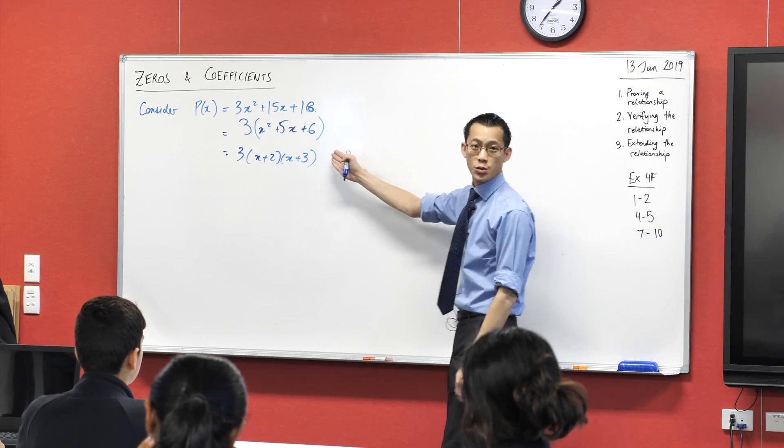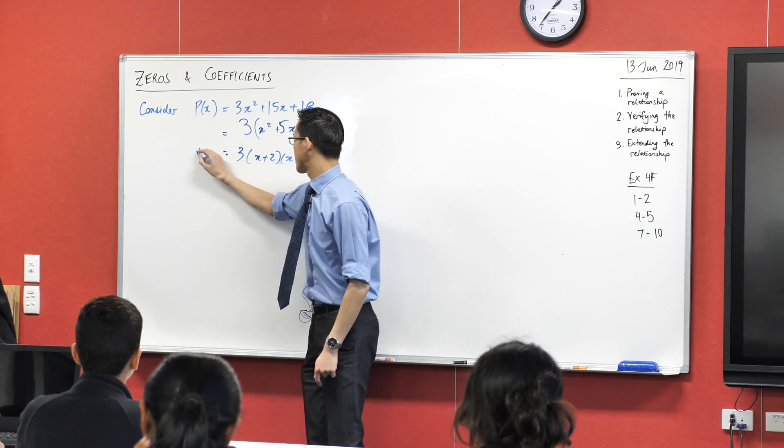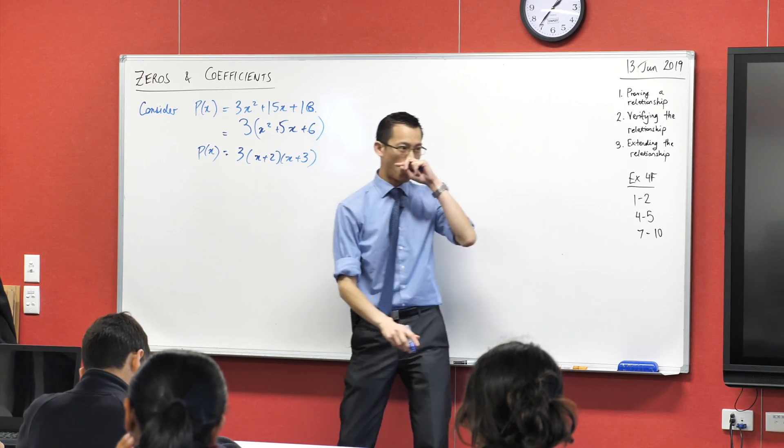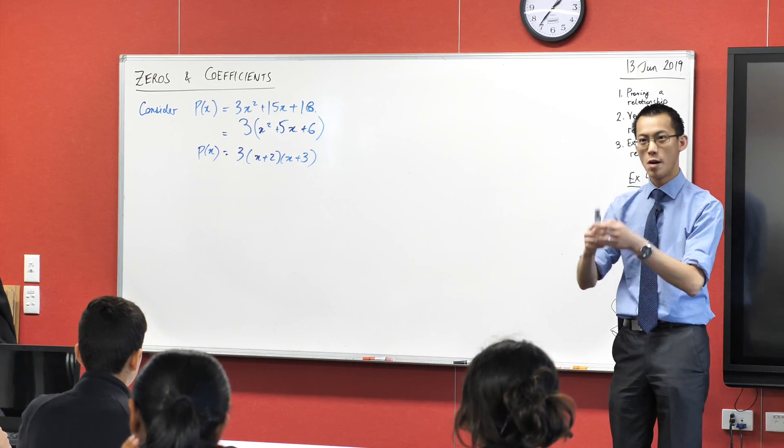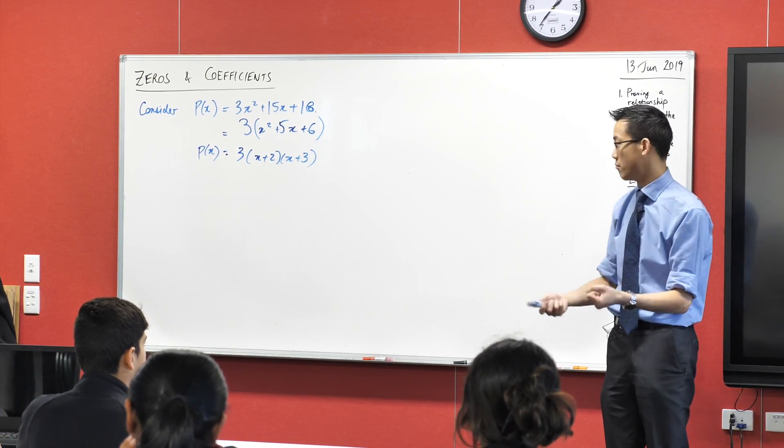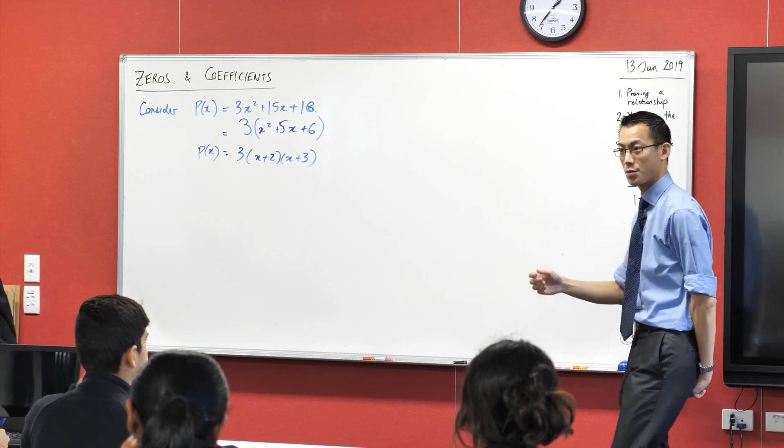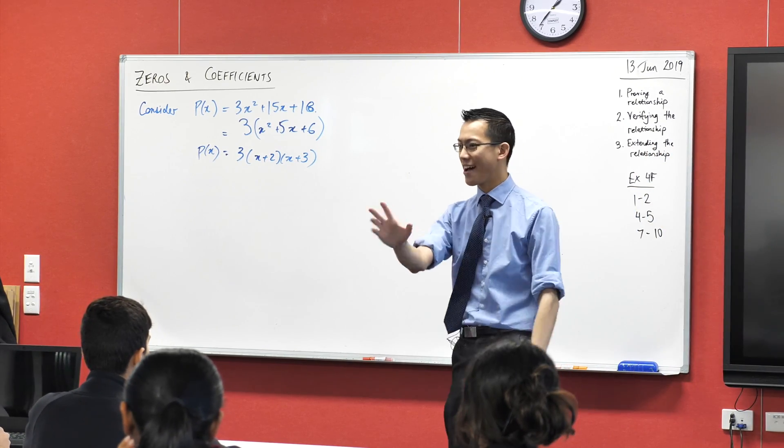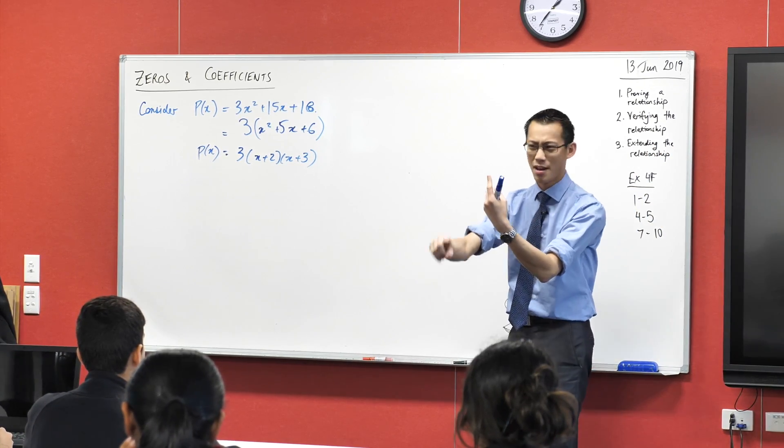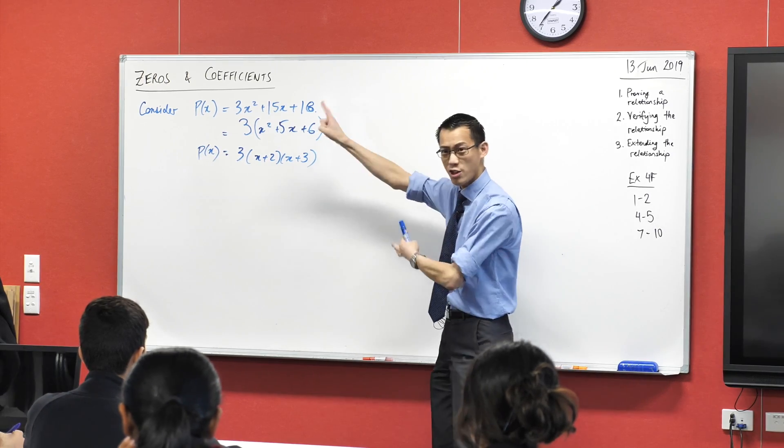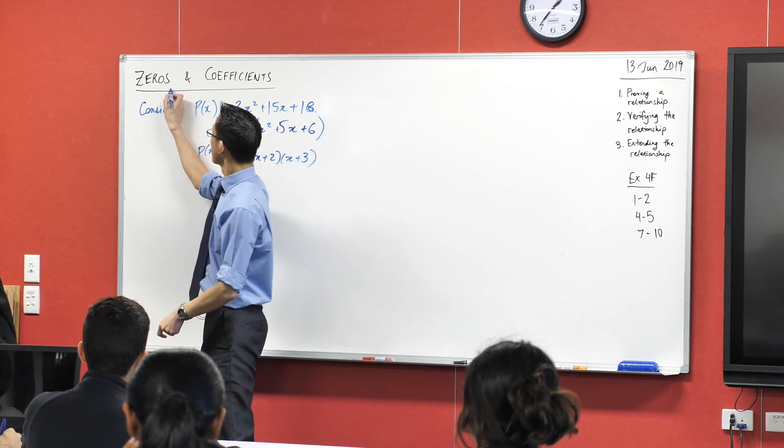This is our polynomial, p of x. Why do you think zeros, remember, we've talked about this language before, why do we call them zeros? Minus 2 and minus 3. What happens with them? Yeah. They are the x-intercepts, we've talked about x-intercepts, we've talked about roots, and we've talked about zeros. I want you to look again at the word, zeros.